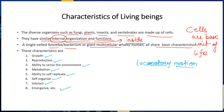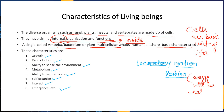For example, earthworms move through the soil surface through longitudinal and circular muscles. Plants move in order to catch sunlight for photosynthesis. Living things also respire — respiration is a chemical reaction which occurs inside the cell to release energy from food. Living things are also sensitive to touch, which is the ability to sense the environment.